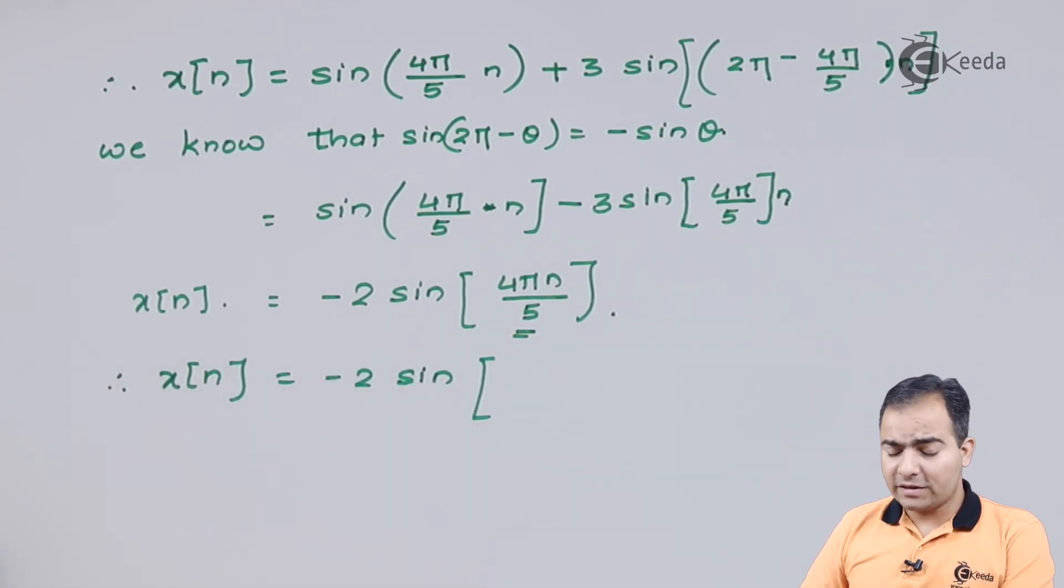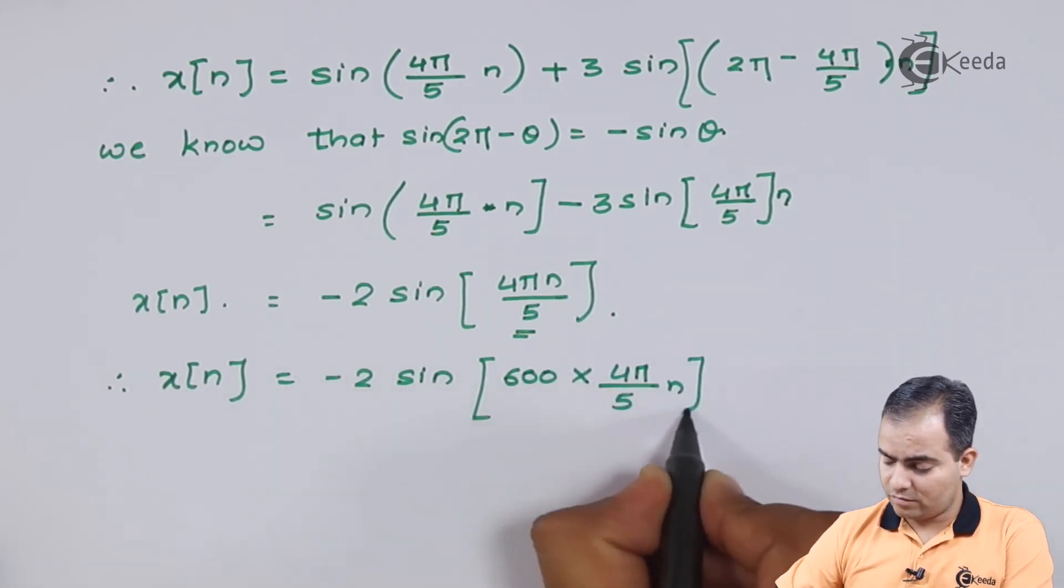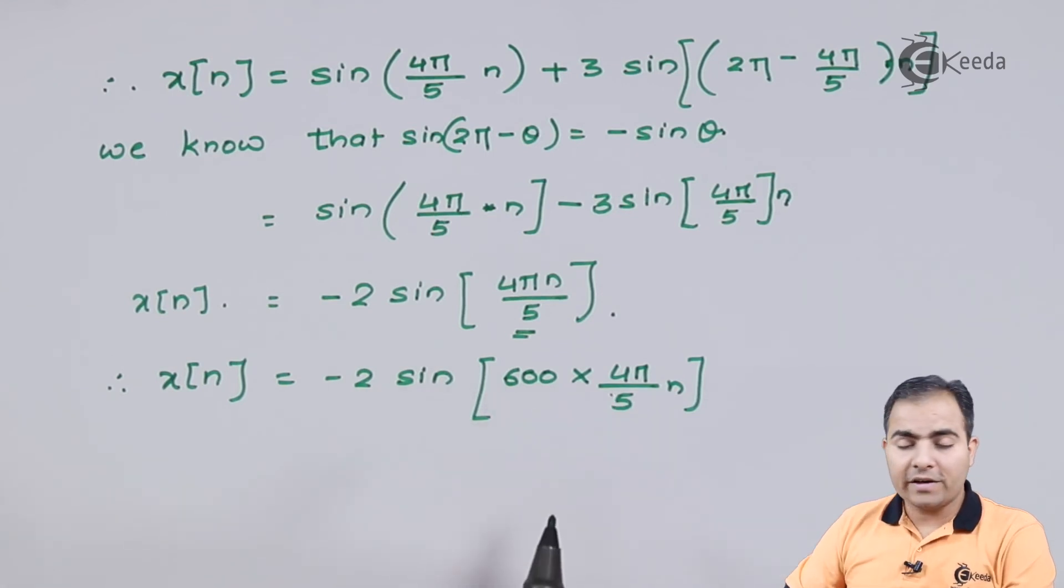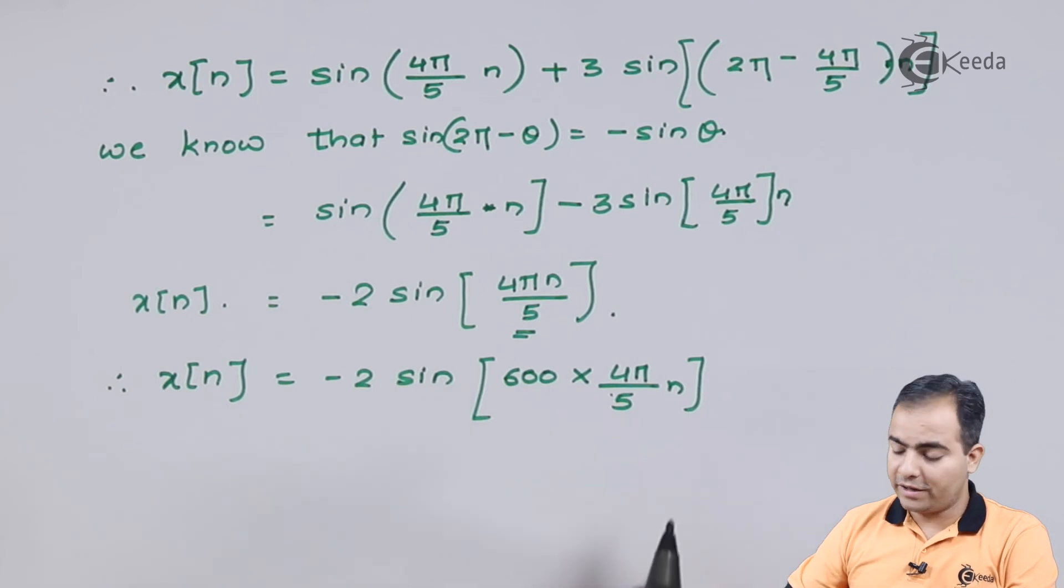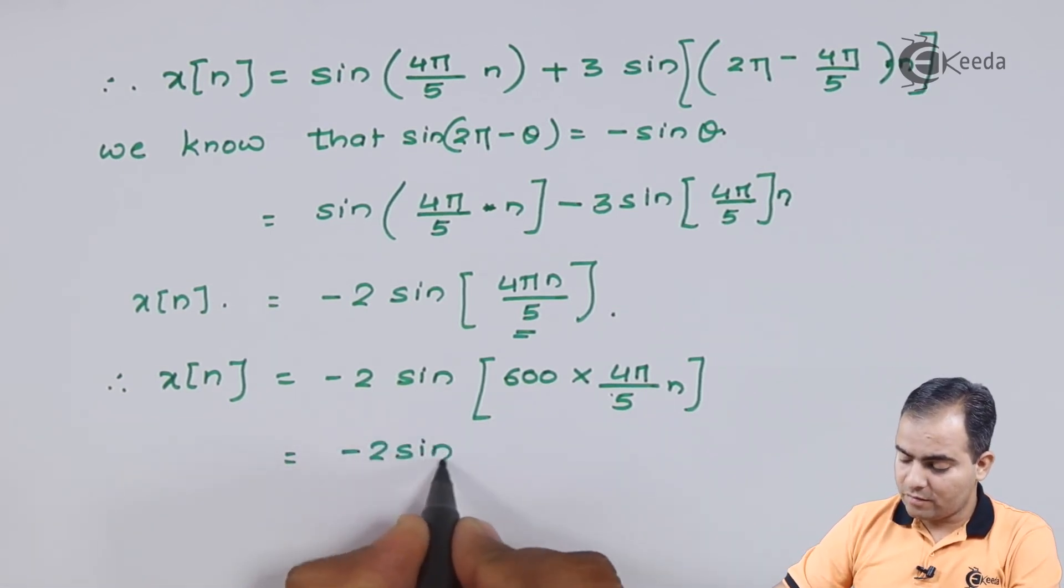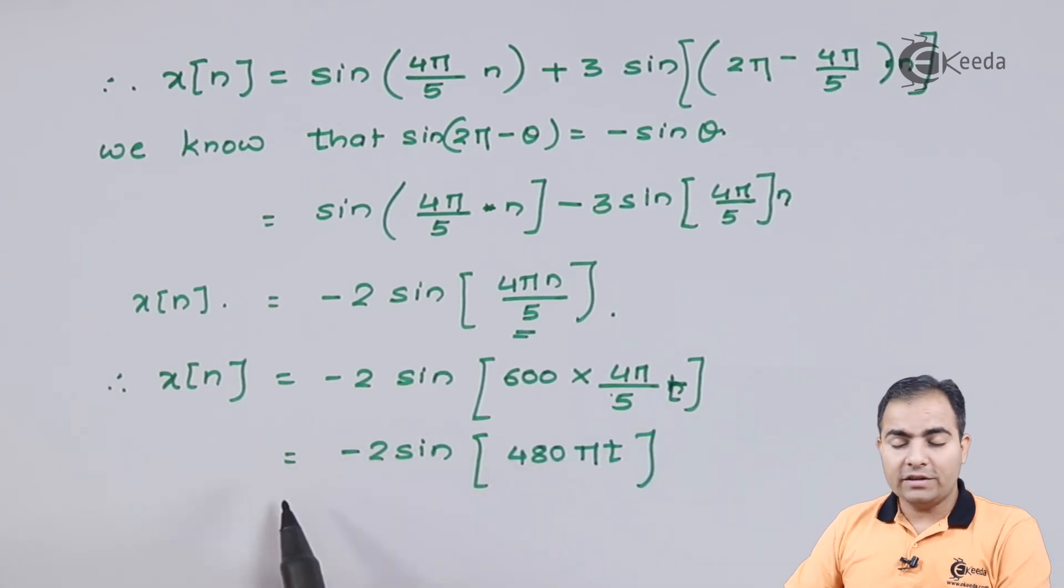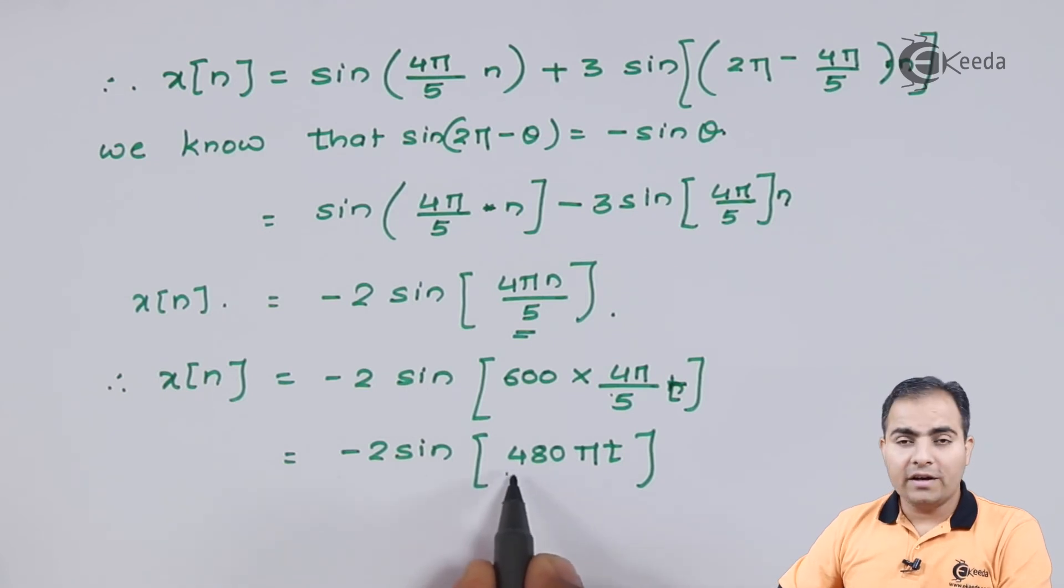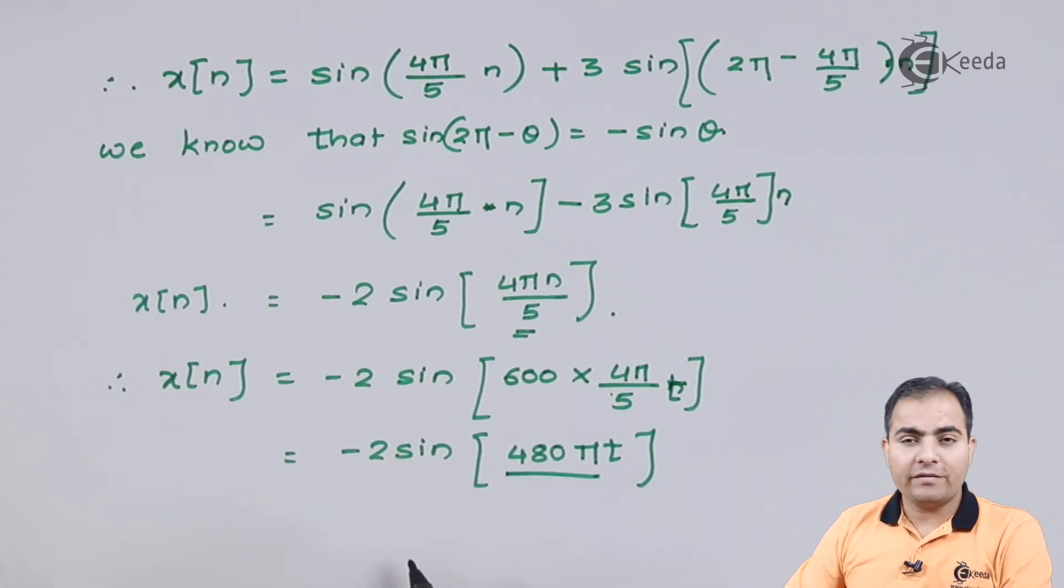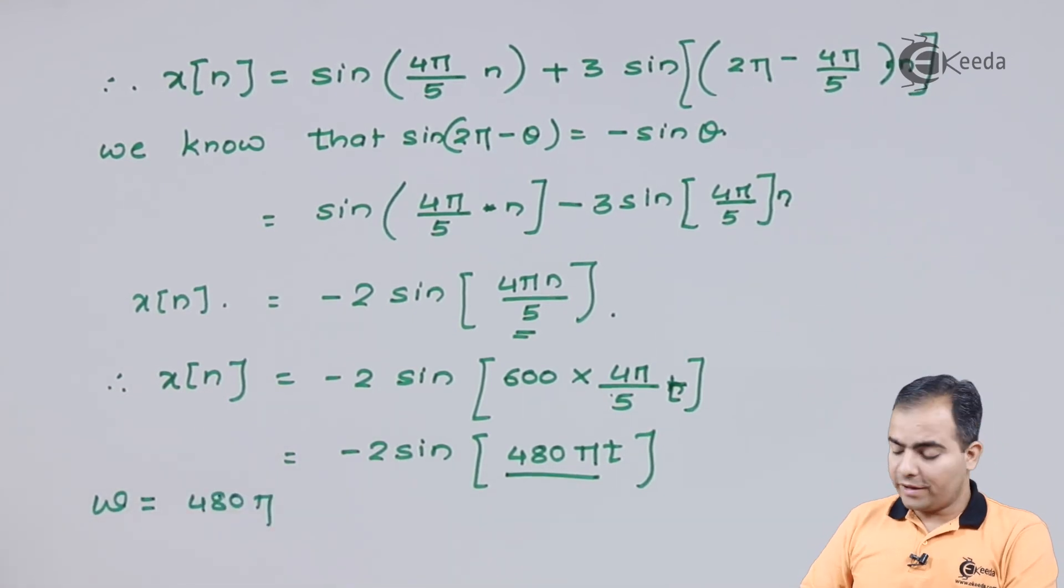Now what is my Fs? Fs is given as 600. Now 600 by 5 is 120, and 120 into 4 is 480. Now this function is available in continuous format. This is my folding frequency. How to calculate folding frequency from here? Just like the omega value, 480π.